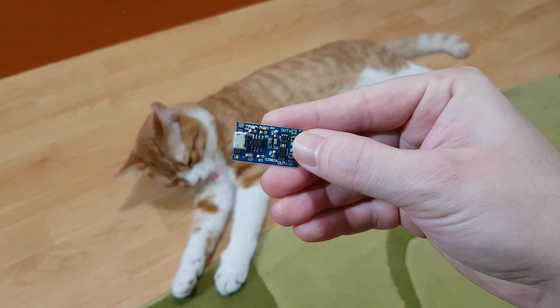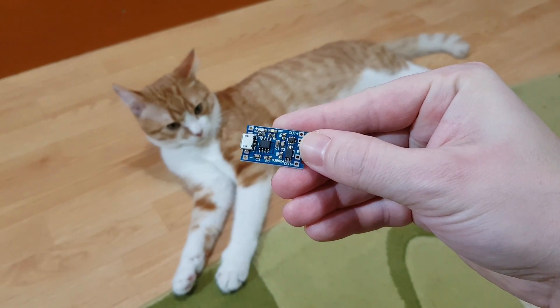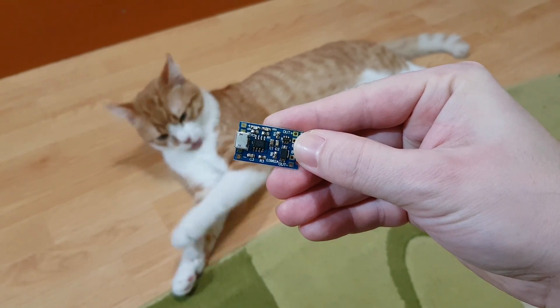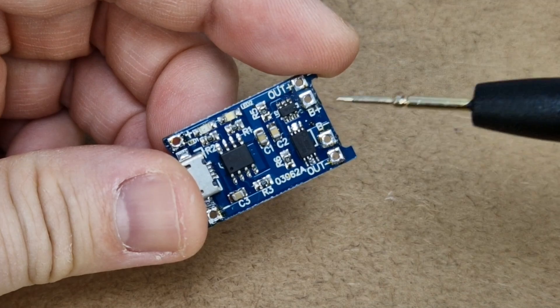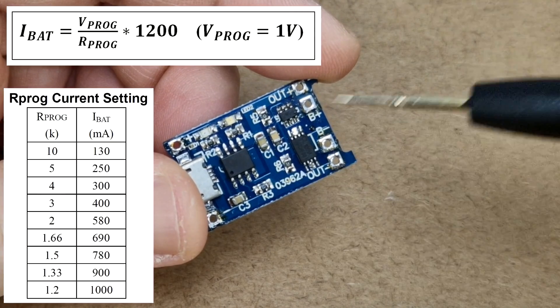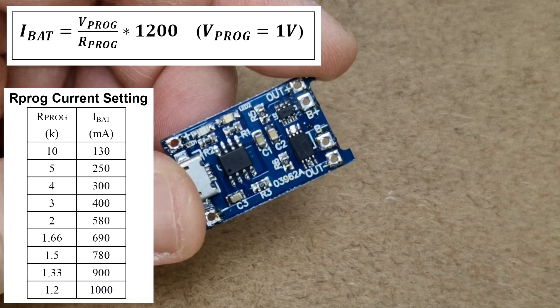The TP4056 IC will get hot when charging with 1 amp, and I don't want that inside the flashlight. To lower the charging current we need to change the R3 programmable resistor according to this table or formula.